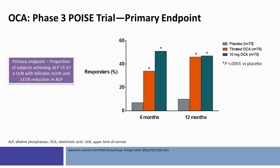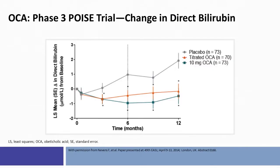This slide shows the primary result of the POISE trial. Patients treated with obeticholic acid, both in the titrated arm and in the 10-milligram arm at 12 months, had a higher likelihood of achieving this composite endpoint at a rate of about 47 to 48%, which was significantly higher than in the group treated with placebo. Interestingly, there was also a significant reduction in serum bilirubin, though the scale is in micromoles per liter. The placebo group showed an increase whereas the treated group showed a decrease.